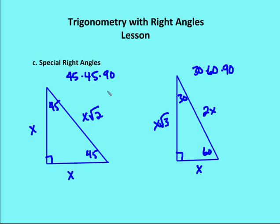When we talk about the basics of trigonometry, we also need to include the relationships of the sides of special right triangles. The two we'll talk about are the 45-45-90 triangle and the 30-60-90 triangle.